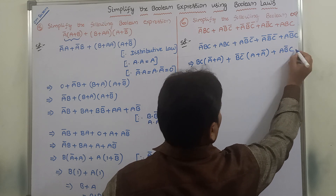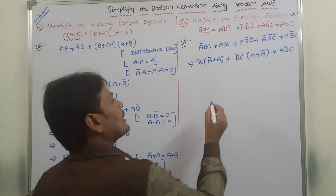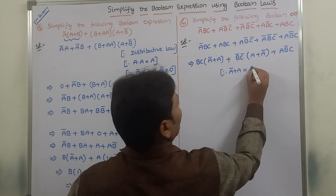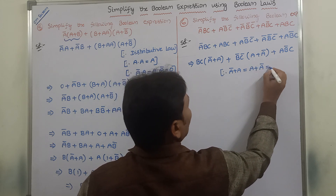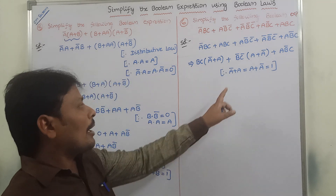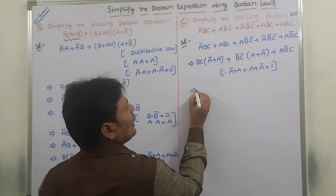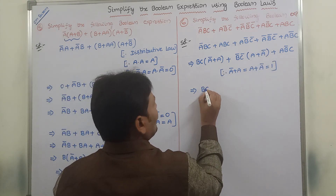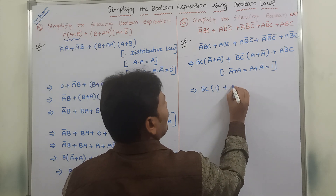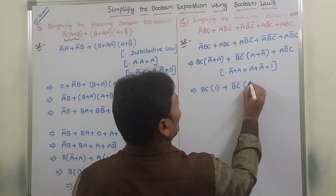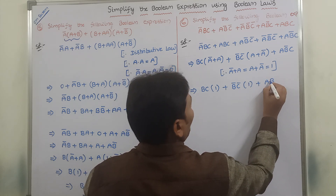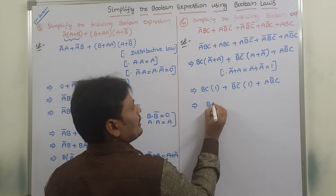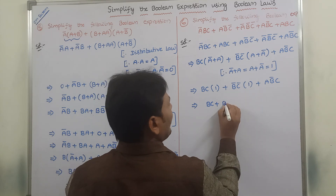Plus A·B-bar·C. We already know that A-bar plus A equals A plus A-bar equals 1. So according to this formula we substitute 1 in place of A-bar plus A and A plus A-bar. So we get B·C·1 plus B-bar·C-bar·1 plus A·B-bar·C.